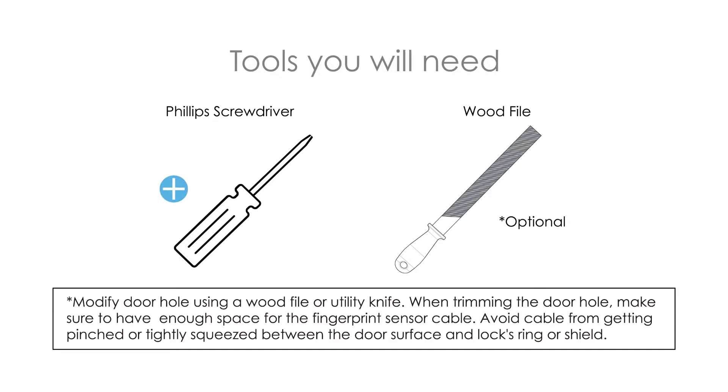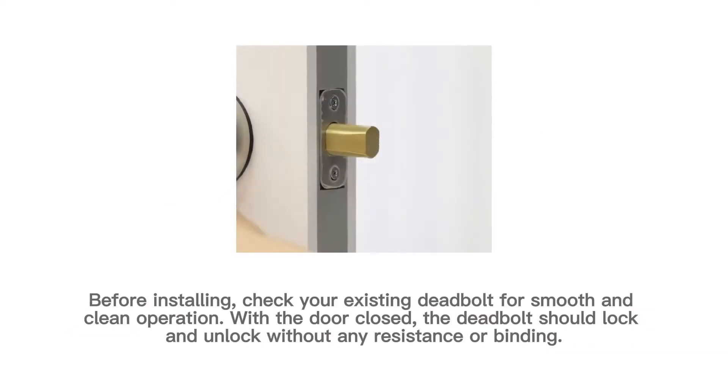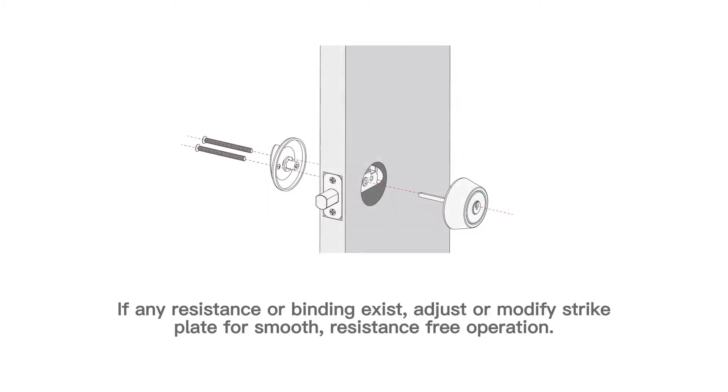To complete this installation you will need a Phillips head screwdriver and optional wood file or utility knife. Before installing, check your existing deadbolt for smooth and clean operation. With the door closed, the deadbolt should lock and unlock without any resistance or binding.